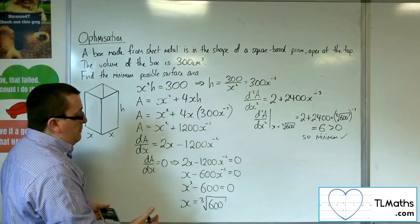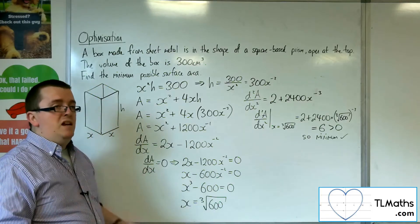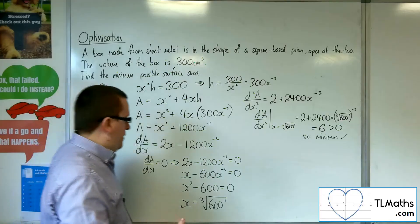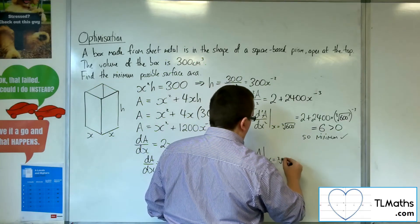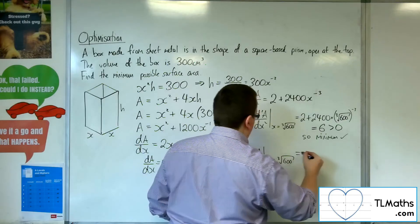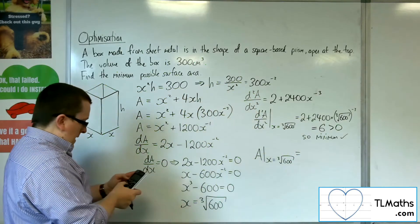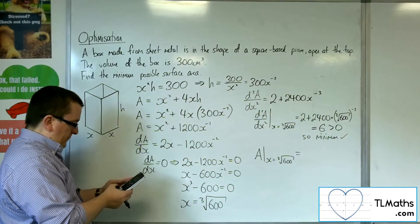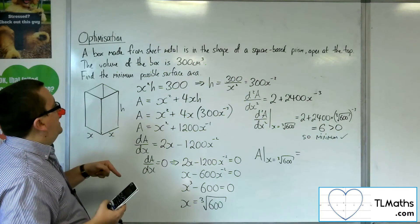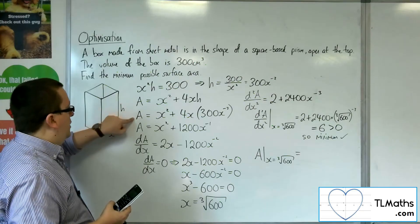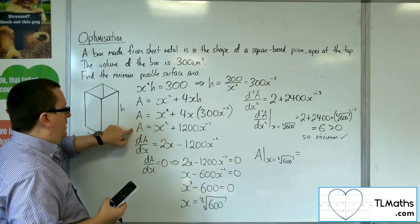So we've now got the x value that will give me the minimum possible surface area. So the surface area when x is the cube root of 600. Okay, so cube root of 600, substituting that into this equation here, or that one.